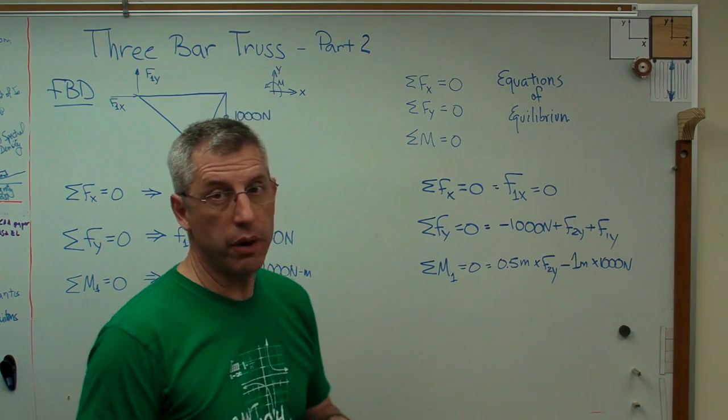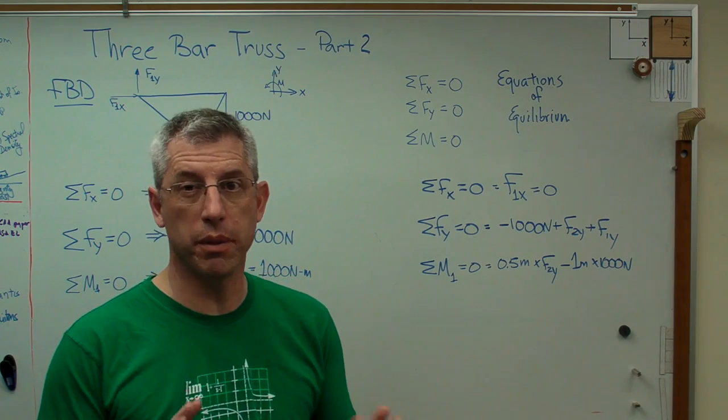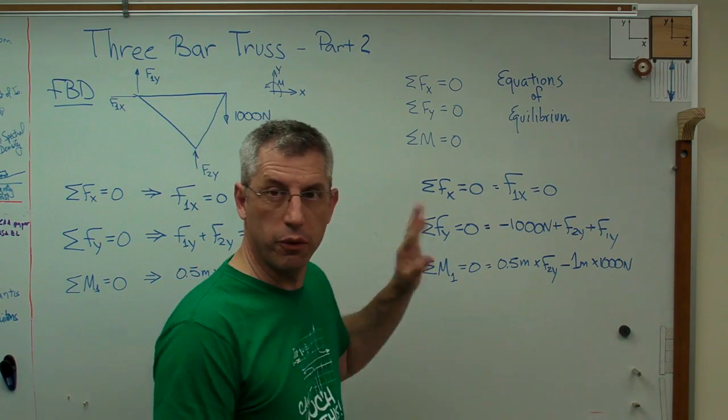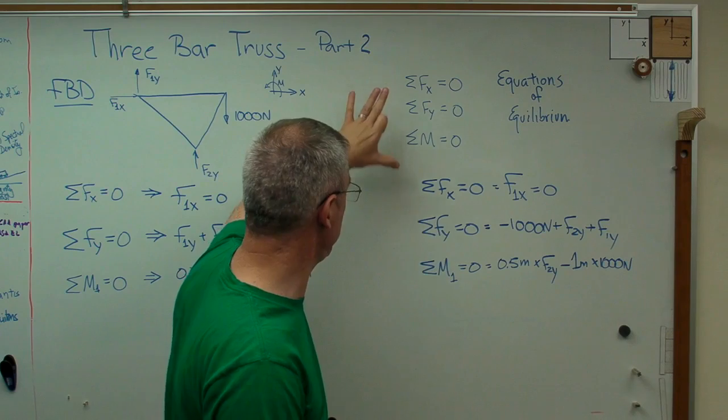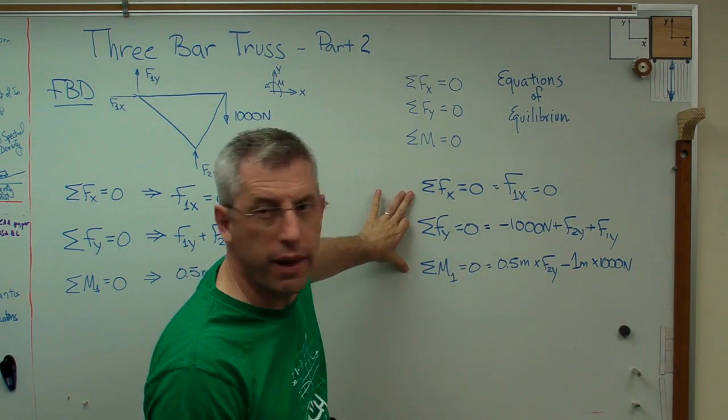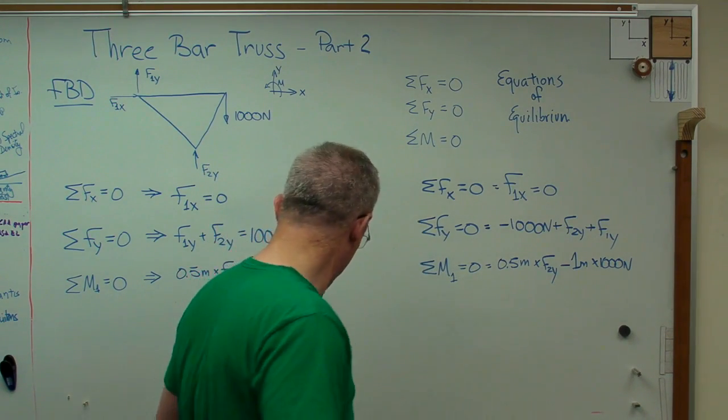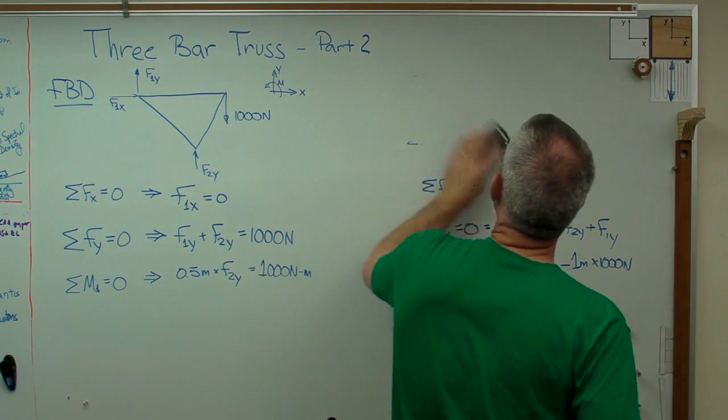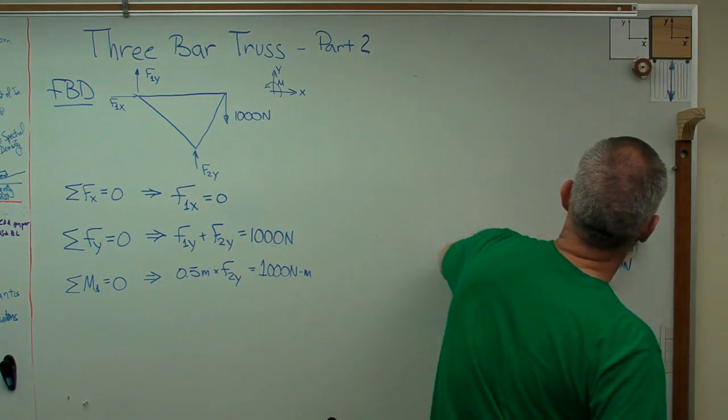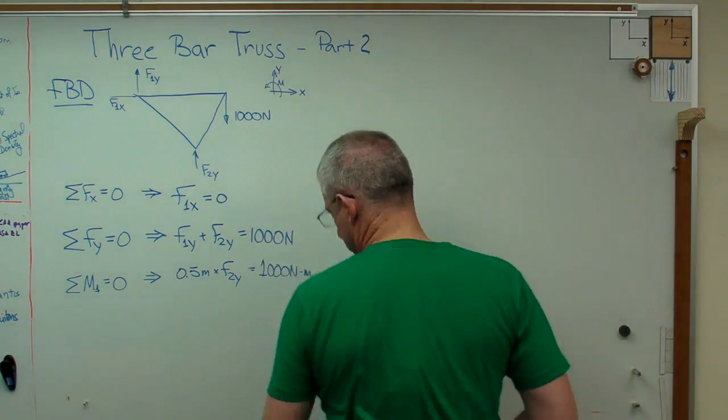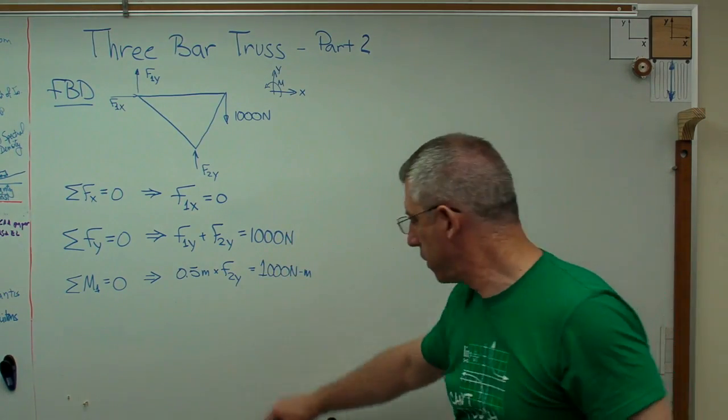It means all the forces and all the moments on this have to add up to be zero. Because if they don't add up to zero, something's moving or accelerating. So we did the free body diagram, wrote out the equations of equilibrium, and we got that far. I'm going to erase all this stuff and transfer it over here so we can see what's going on.